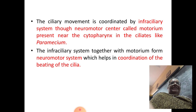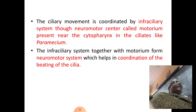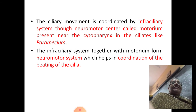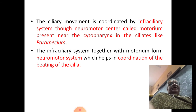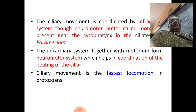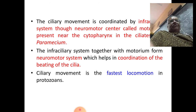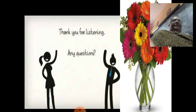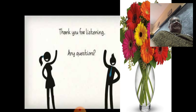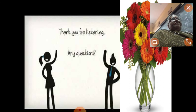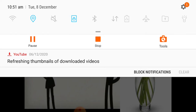The infraciliary system together with the motorium form what is known as the neuromotor system, and its main function is coordination of the beating of cilia. Ciliary movement is the fastest locomotion seen in Protozoa. My dear students, I have tried to cover the swimming movement in Protozoa — one by flagellum and the other by cilium. Thank you for your patient listening. Any questions, you can contact me. Till then, stay blessed. Thank you.